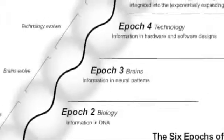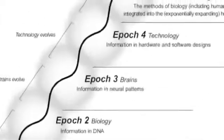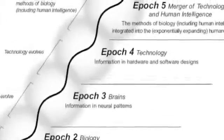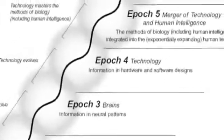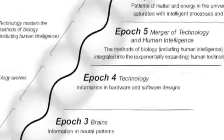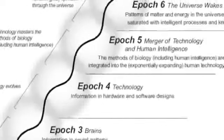Evolution works through interaction. Each stage or epoch uses the information processing methods of the previous epoch to create the next. I conceptualize the history of evolution, both biological and technological, as occurring in six epochs.